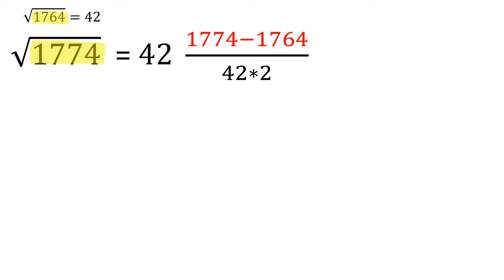Let's calculate the decimals. In the numerator, we will have the difference of 1774 and 1764. In the denominator, we will have 42 times 2.